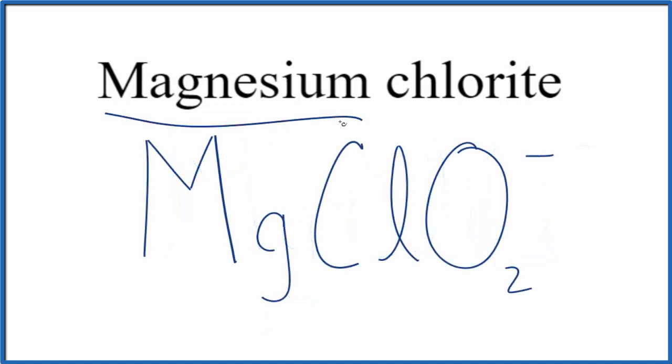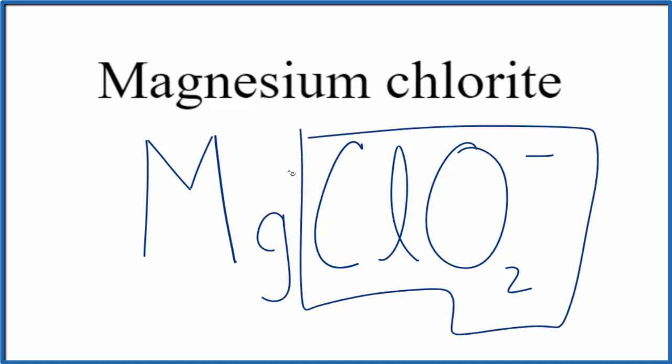Since magnesium is a metal and this chlorite ion is made up of a group of nonmetals, this is an ionic compound. We have to think about the charge. We know that the whole chlorite ion is one minus. Magnesium on the periodic table is in group two, so it forms ions that are two plus.